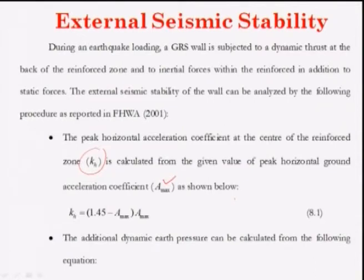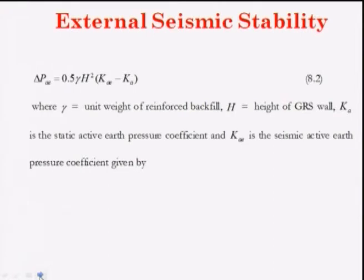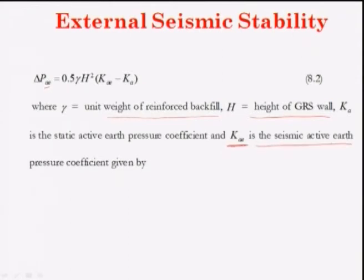The additional dynamic earth pressure ΔP_AE due to earthquake force can be calculated as: ΔP_AE = 0.5 · γ · H² · (K_AE − K_A), where γ is the unit weight of reinforced backfill, H is the height of the GRS wall, K_A is the static earth pressure coefficient, and K_AE is the seismic active earth pressure coefficient.